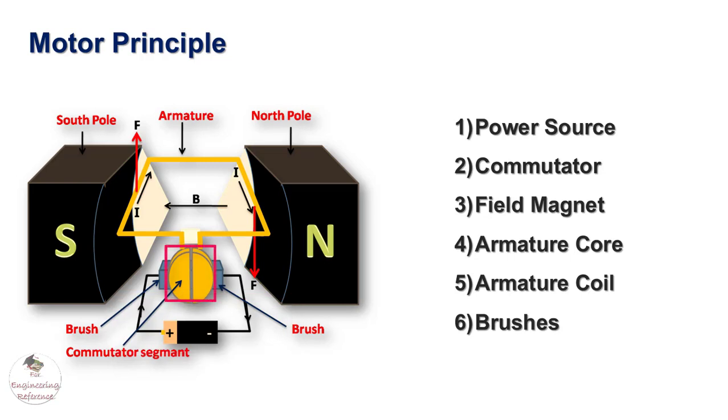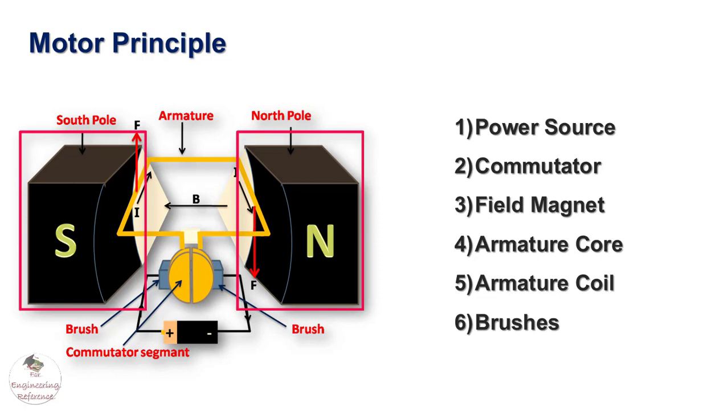Commutator, it is the rotating interface of the armature coil with a stationary circuit. Field magnet, the magnetic field helps to produce a torque on the rotating armature coil by virtue of Fleming's left-hand rule.